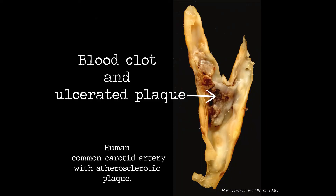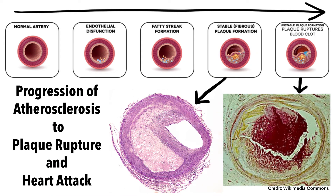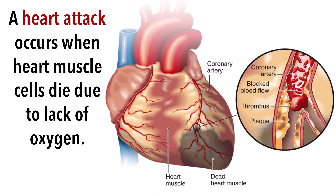These plaques are yellow-tan in color and raised above the surrounding vessel wall. Sometimes these plaques can rupture, causing blood clots to form. Any superimposed blood clots over an ulcerated plaque will typically be reddish-brown in color. Acute plaque rupture is typically what causes a heart attack. When plaque inside a coronary artery — which supplies the heart with blood and oxygen — ruptures, a blood clot often forms and can completely block off the inside of the artery, cutting off blood supply and oxygen to the heart muscle.